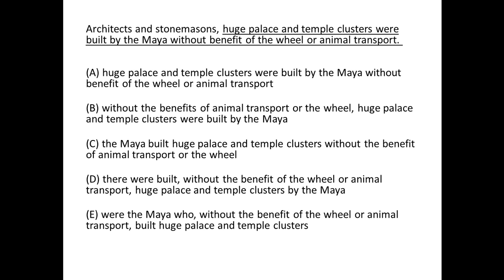Hi, my name is Mandeep. Let's look at this question. If you look at the part before the underlined portion, there is 'architects and stonemasons' — so this is a modifier. That means after the comma, we need to have a subject. Architects and stonemasons — we are talking about some group of people, so the subject has to be some kind of people or a group of people.